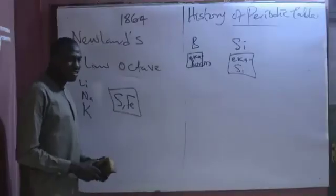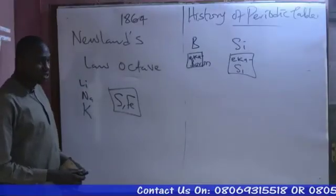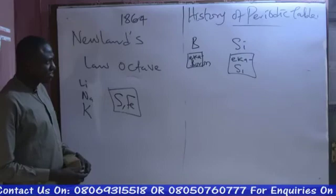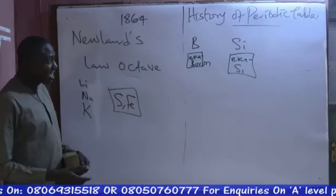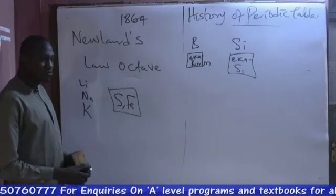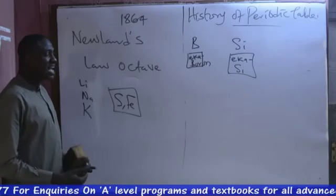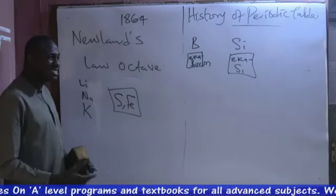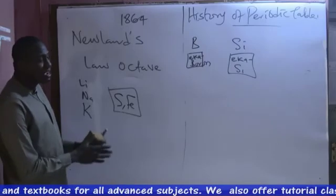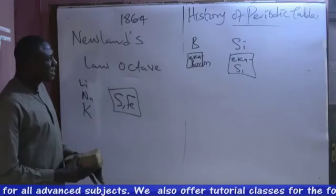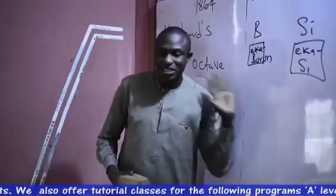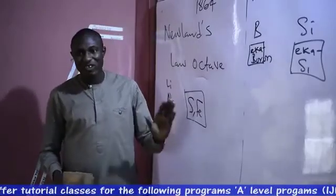Then, after the discovery of the modern atomic theory, starting from the work of John Dalton, up to other scientists — J.J. Thomson and Rutherford — we discovered that elements are meant to be arranged in order of increasing atomic number and not atomic weight. And that leads to the modern periodic law, which states that the characteristics of elements in the periodic table is a periodic function of their atomic number and not atomic weight.